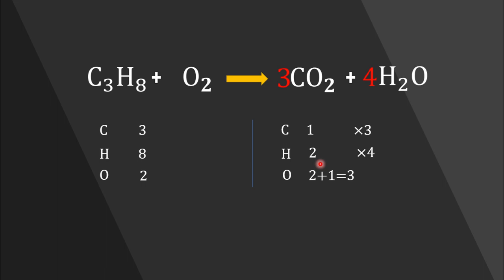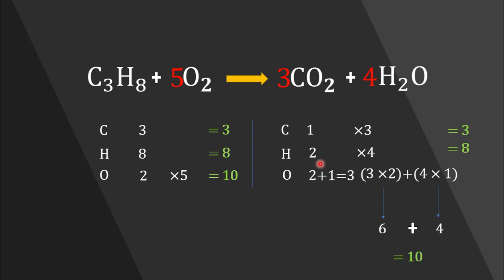Be careful — oxygen is still unbalanced. In the reactant side we have two oxygen atoms, and in the product side we have a total of ten oxygen atoms: six from carbon dioxide and four from H₂O. To balance oxygen, we should add coefficient five in front of the oxygen molecule in the reactant side. Now oxygen is also balanced. Our last step is to double-check the balanced equation — there are three carbon, eight hydrogen, and ten oxygen atoms on each side.